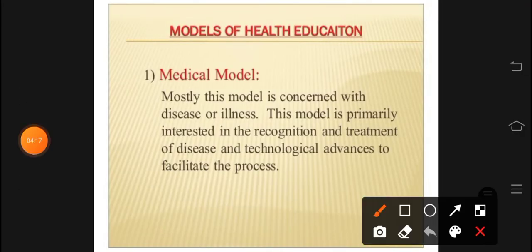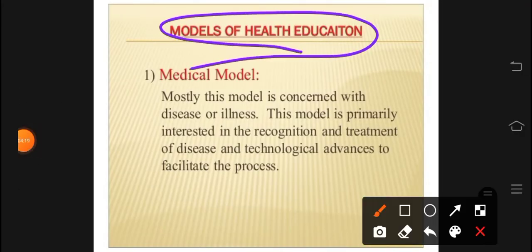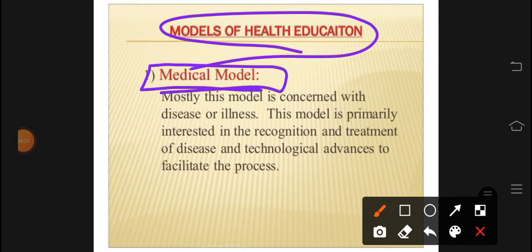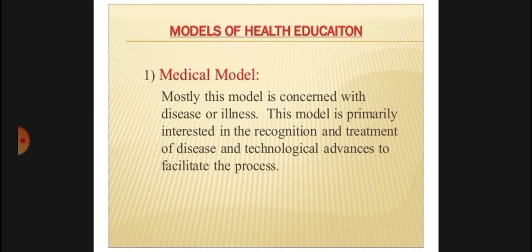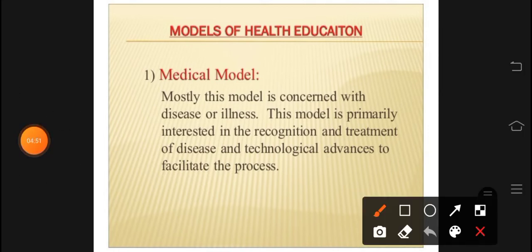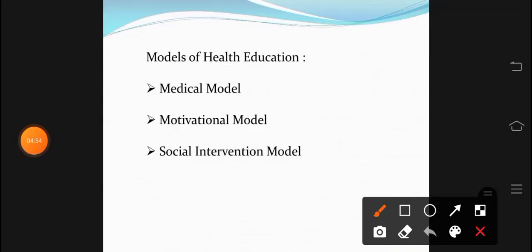Models of health education — what are the models of health education? First of all, there is the medical model, which deals with illness and treatment. The patient has an illness, then we detect whether it is an illness or a disease. This model covers health care and health education through detecting illness and disease using technologically and scientifically approved methods. This is the individual level where the patient comes and the doctor tells us about the illness.